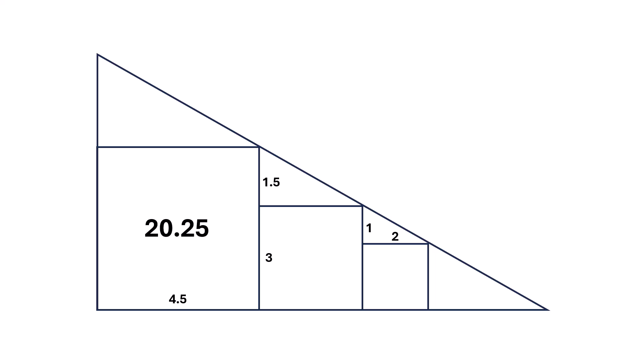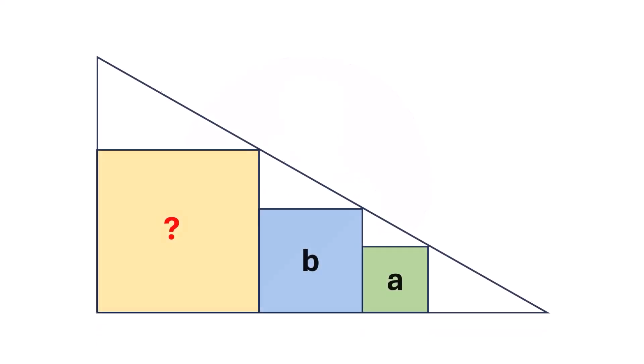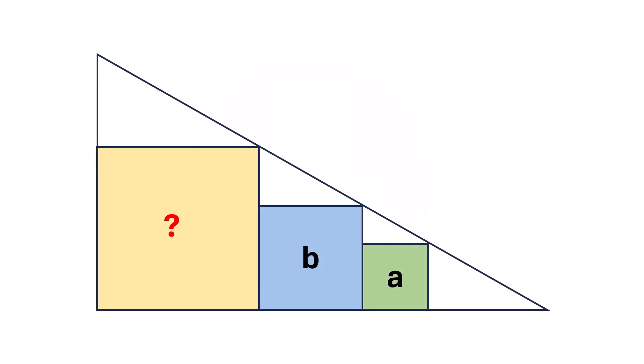Finally, we get this diagram, and that's our solution. But wait, before you go, I've got one more challenge for you. Can you find the area of the largest square in terms of A and B? Drop your answer in the comments below, and let's see who gets it right.